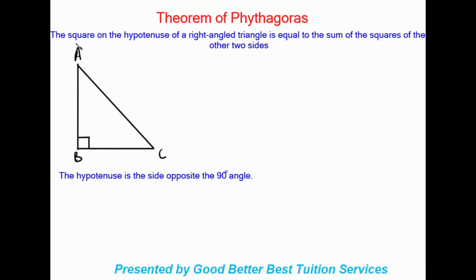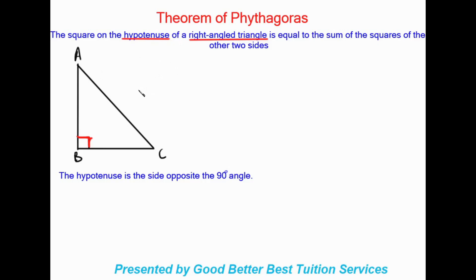So let's see what the theorem of Pythagoras is. The theorem states: the square on the hypotenuse of a right angle triangle — hypotenuse is a new term for us. The hypotenuse is the longest side of your triangle.